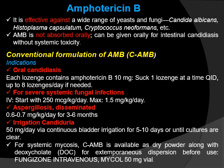Amphotericin B is available in two kinds of formulations: conventional Amphotericin B formulations and liposomal Amphotericin B formulations. In liposomal formulations, liposomes containing Amphotericin B are produced and then used to make different dosage forms like tablets and injectables. Liposomes are spherical phospholipid vesicles containing drugs.